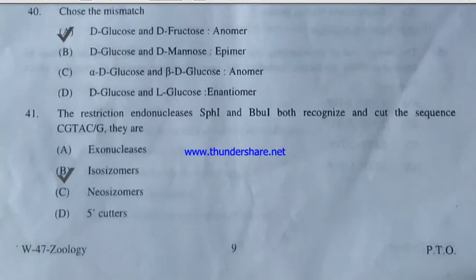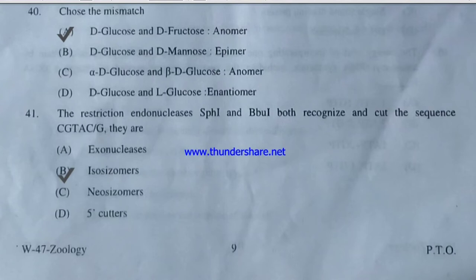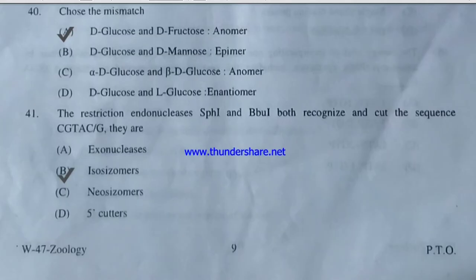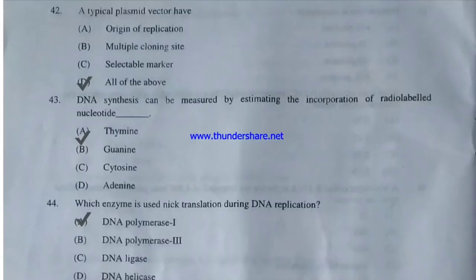The restriction endonucleases SphI and BbuI both recognize and cleave the sequence CGTAC/G. They are exonucleases, isoschizomers, neoschizomers, or 5-prime cutters? The answer is isoschizomers — these enzymes that recognize and cut the same sequence are called isoschizomers. A typical plasmid vector has an origin of replication, multiple cloning site, selectable marker, or all of the above? The answer is all of the above.